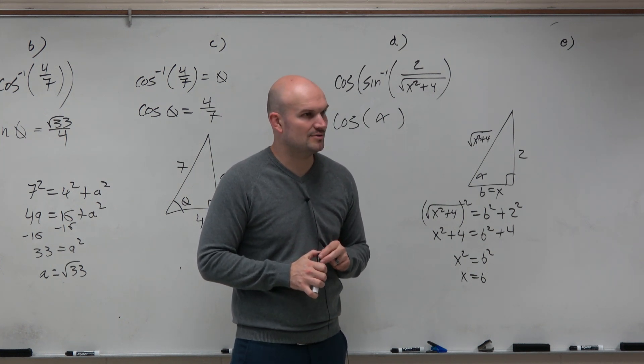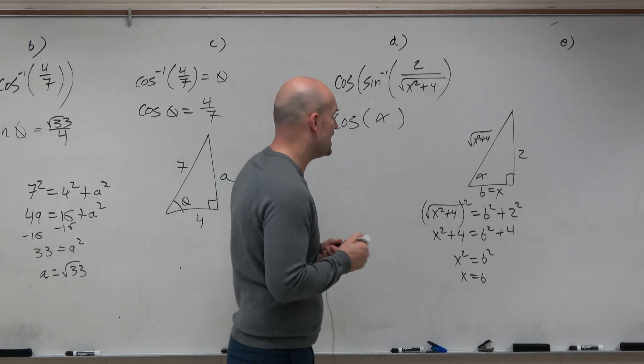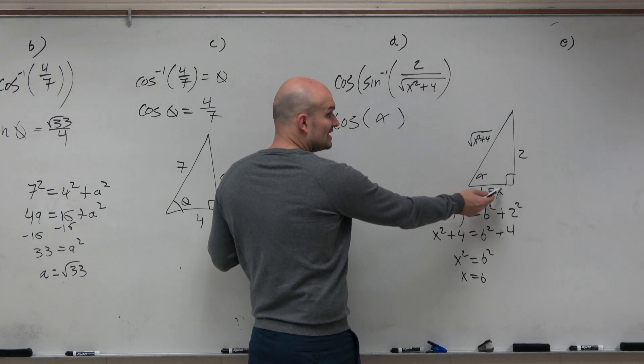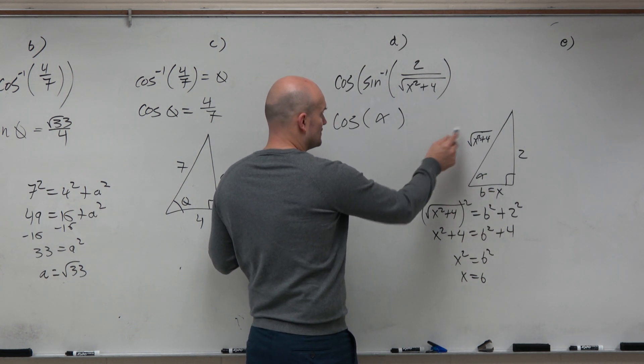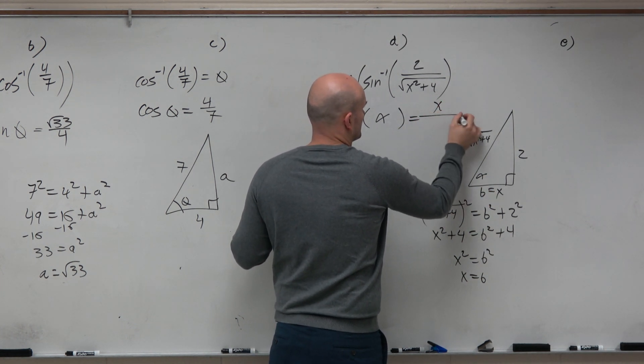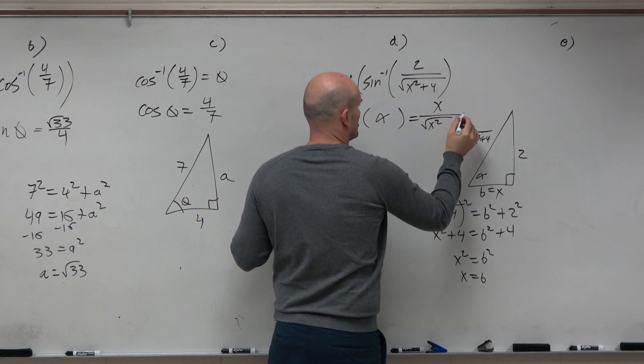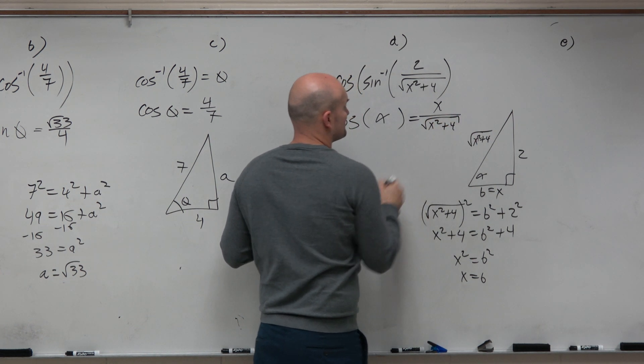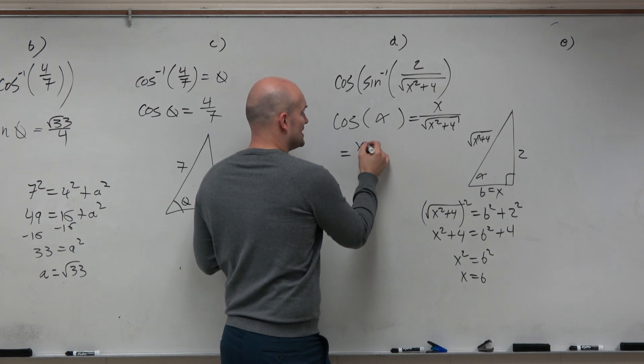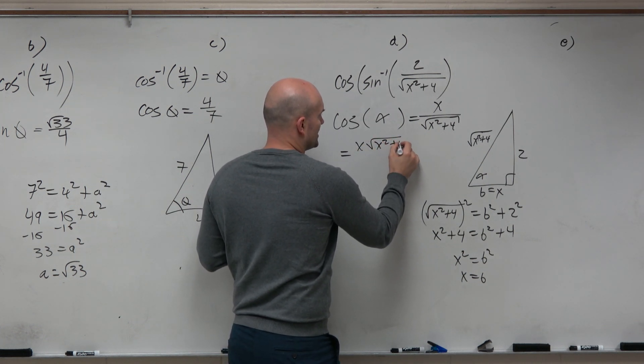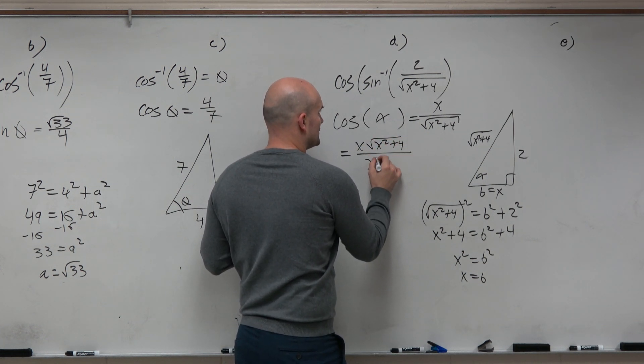Oh, that looks a lot more confusing than it actually was. So now, I have my side length is x. So the cosine is x over the square root of x squared plus 4. And then if I wanted you to simplify it, you could rationalize the denominator, which hopefully you're very good at at this point. And you can just do that in your head.